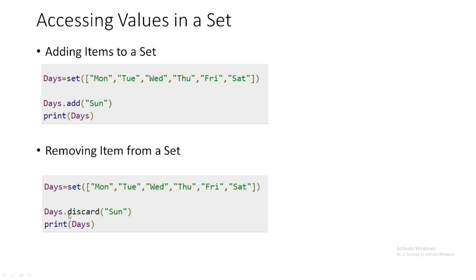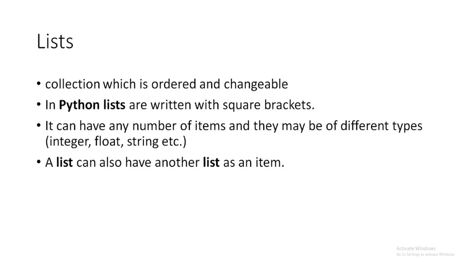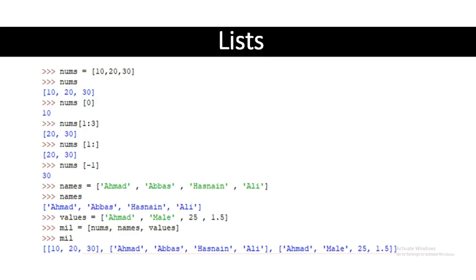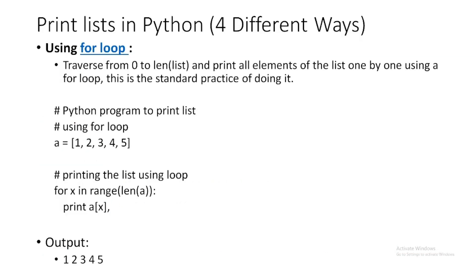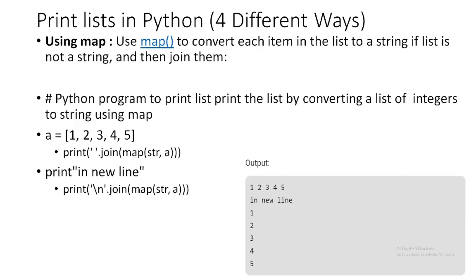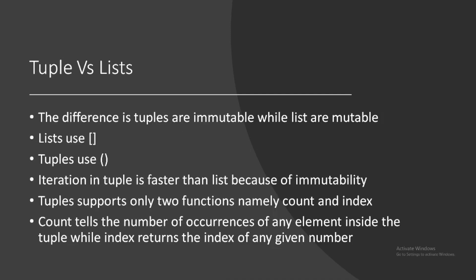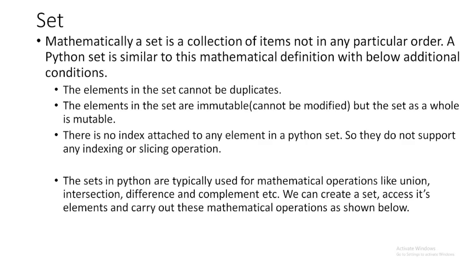To recap what we have learned today: first, user input — how to take inputs from the user using the input() function. Then lists — a changeable collection, how to create a list and access its elements. Then the different ways to print list items: using a for loop, without a loop using asterisk, using the separator, converting a list to a string, and using map(). Then tuples — similar to lists but immutable.